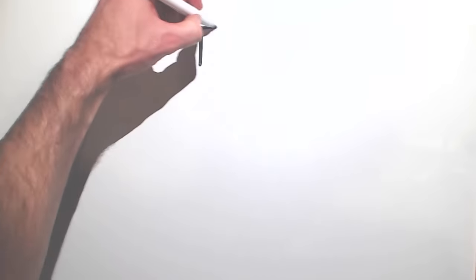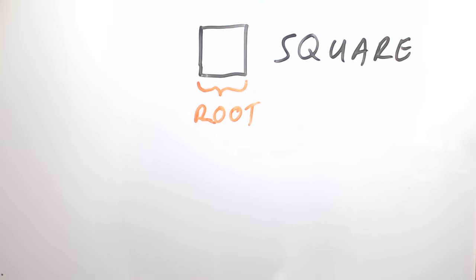To answer that question, let's first look at what defines a square as that particular square. It's the side length or the width or height - it's all the same thing. This is the root from which a square grows.